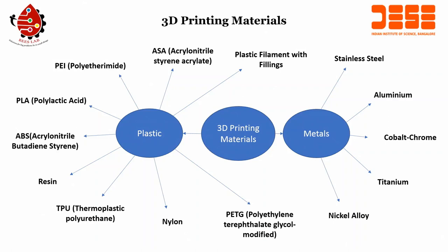We can use several materials for printing — it can be plastic or metals. The metal 3D printer is separate from the plastic 3D printer. For plastic, we can use PETG, nylon, thermoplastic, ABS, resin, ASA, PEI, PLA and so forth. For metal, it can be nickel alloy, stainless steel, aluminum, cobalt, chrome, and titanium. These are the 3D printing materials that are used.